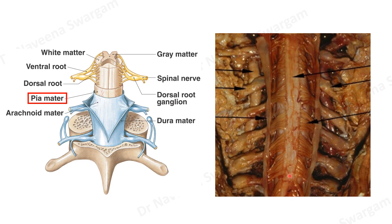Here is the spinal cord and here are the spinal nerves arising from the spinal cord. The spinal pia mater extends as tubular sheets around the spinal nerves until their exit at the intervertebral foraminae, where it blends with the perineurium of the spinal nerves.